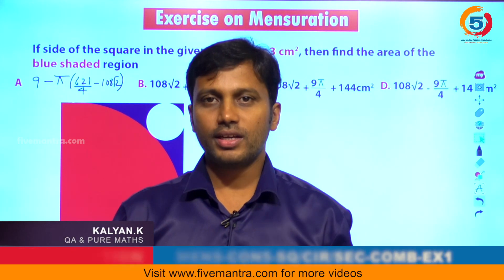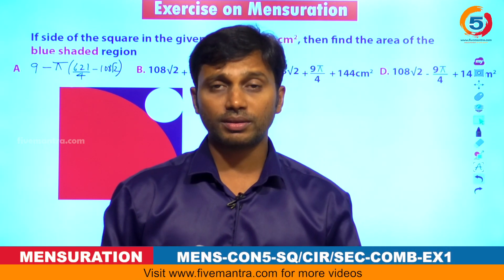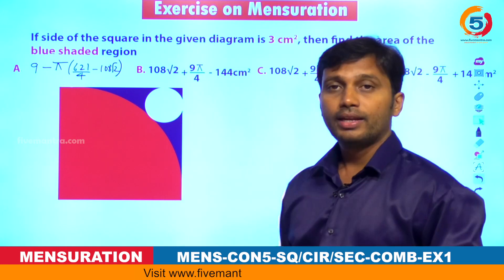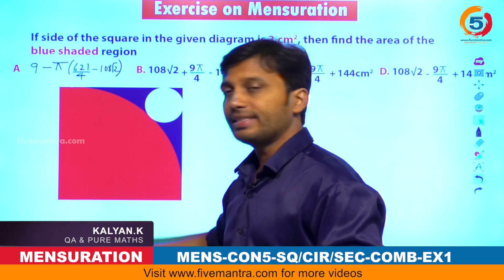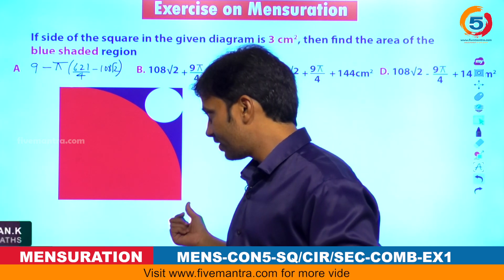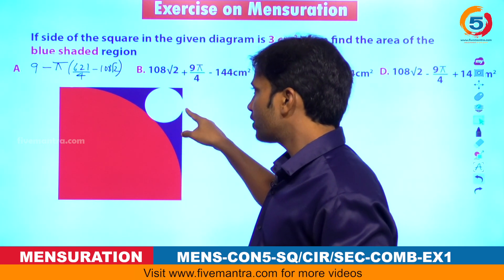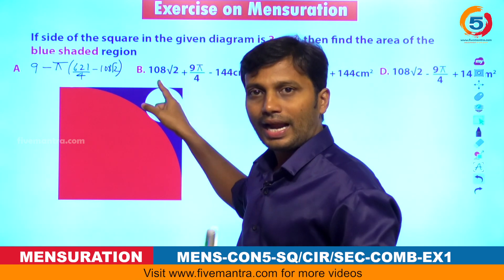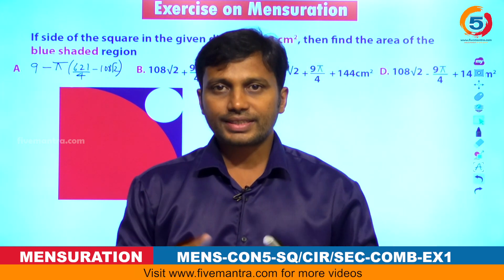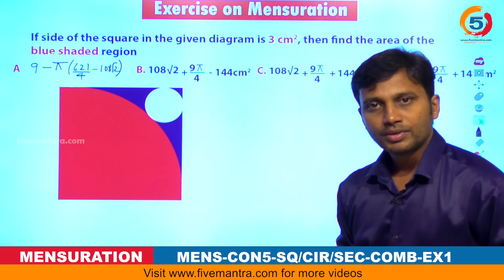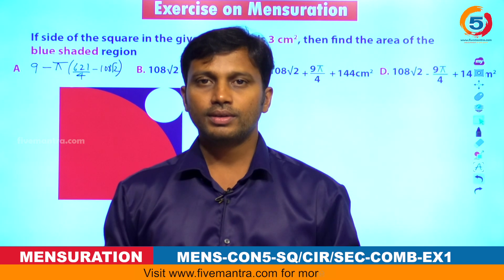Hello guys, welcome to fivemantra.com. This is Kalyan, the faculty of aptitude. We are going to do an exercise on the previous technique we taught about this combination — a square with one sector of angle 90 degrees and radius equal to the side of the square drawn inside, touching the sector and the square walls. One circle is drawn and we need to find the radius of that circle. Now, let me remind you of the technique before we begin.